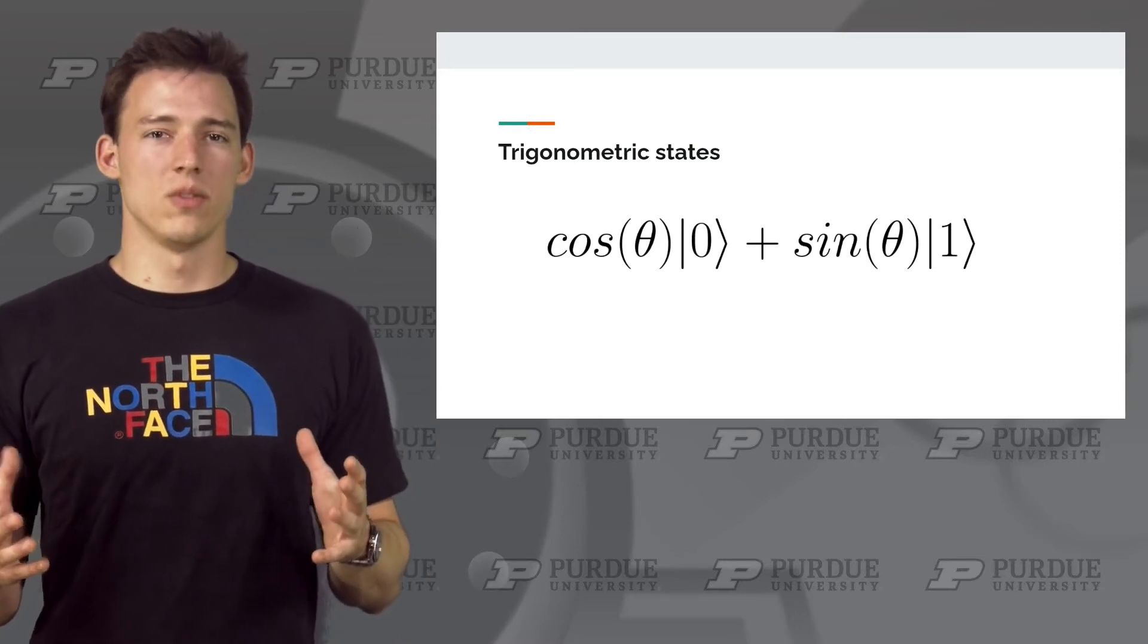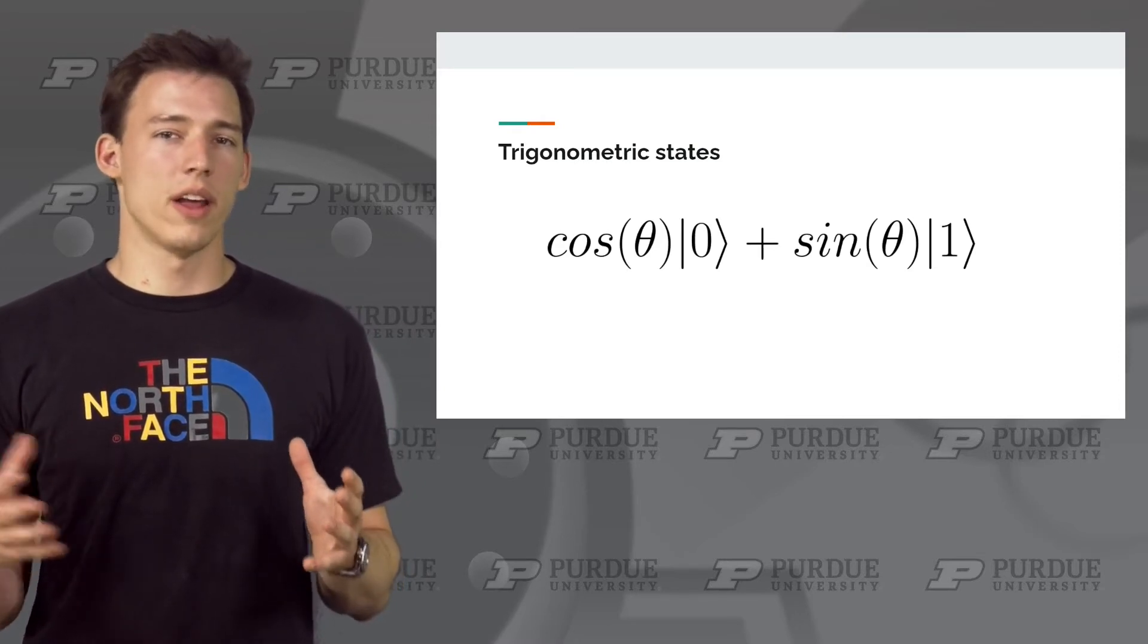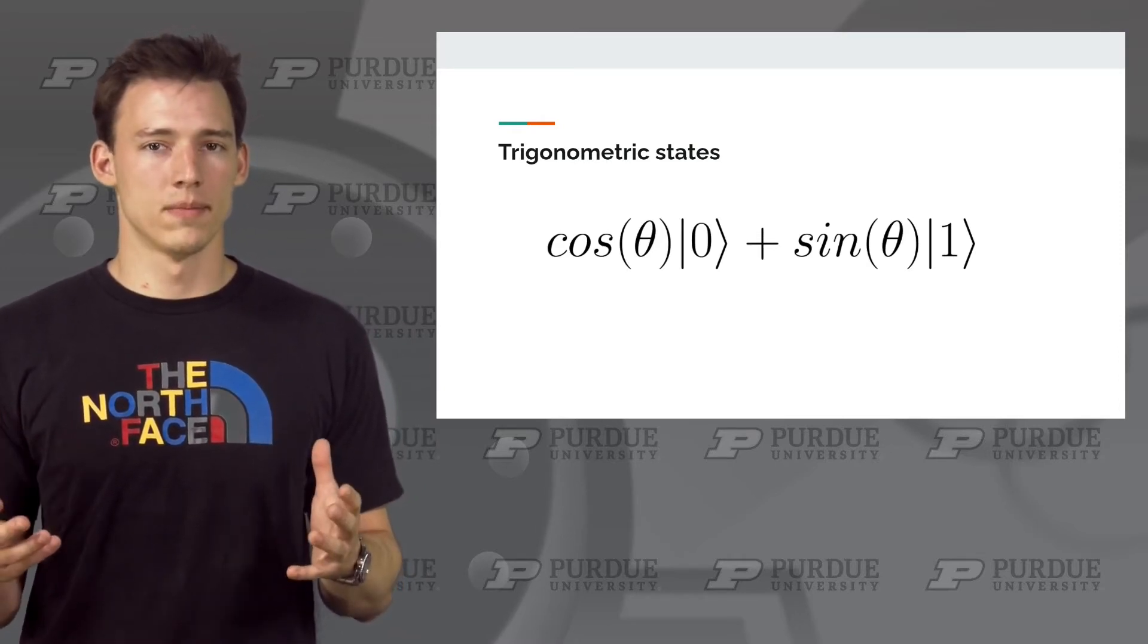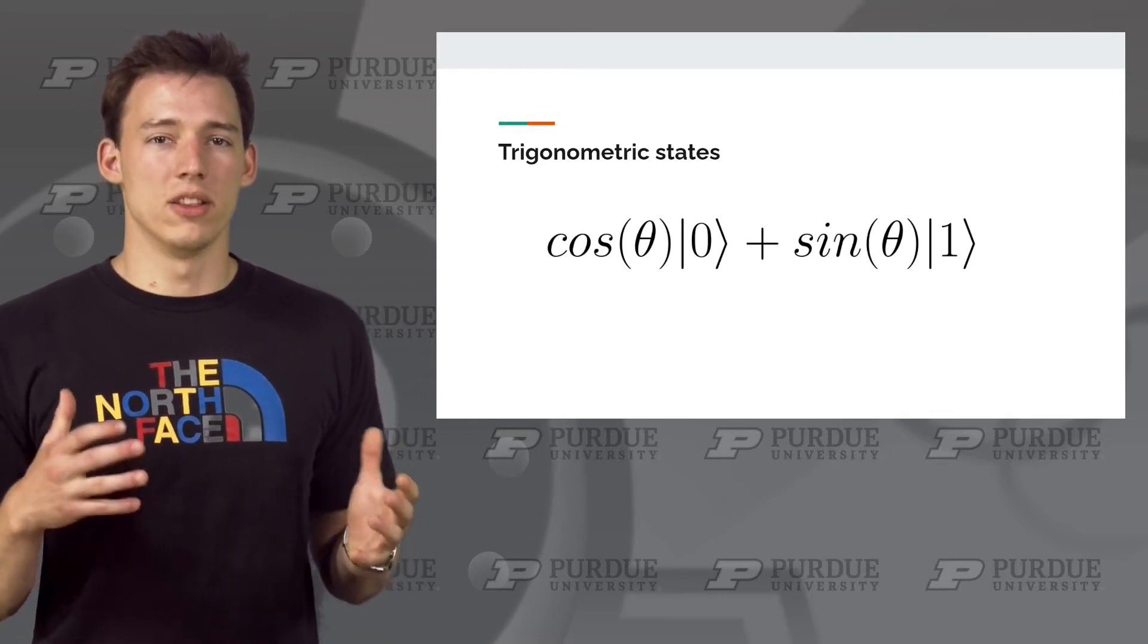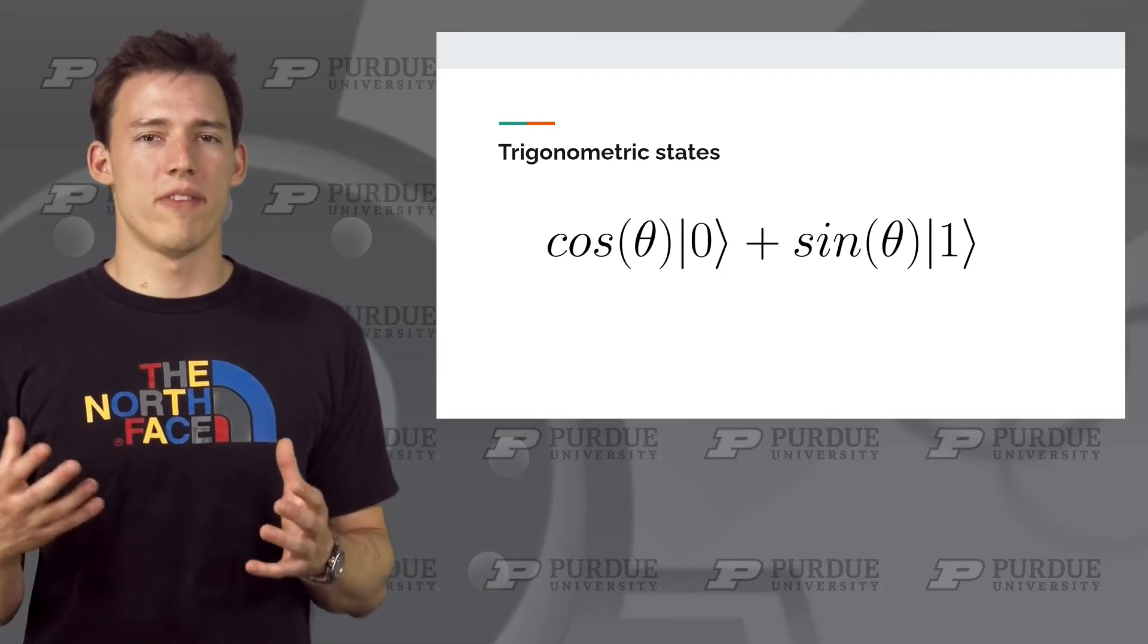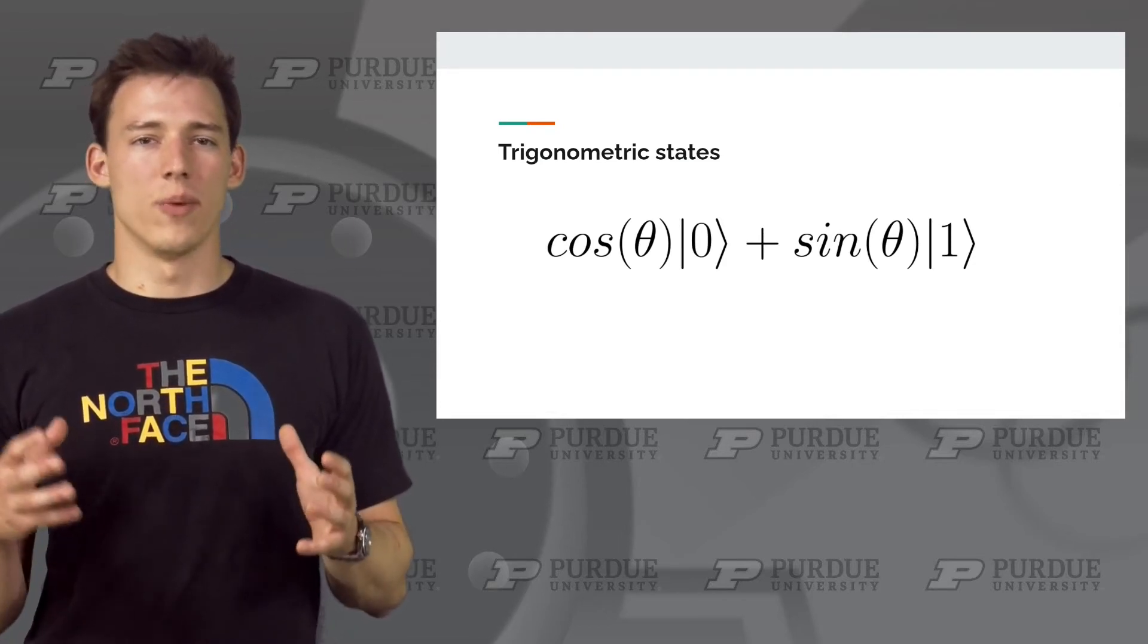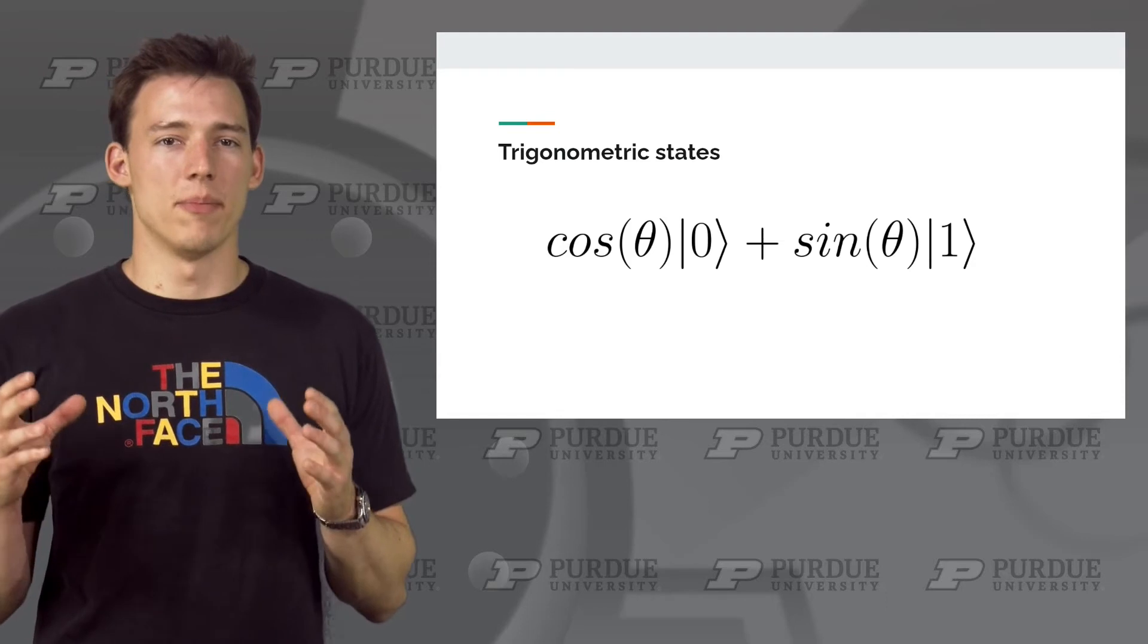Thanks to trigonometric identities, we always know that the sum of cosine squared and sine squared will be equal to 1. So with that in mind, we can think of writing a quantum state like this. This allows us to describe a large number of possible states just by varying theta. However, we are missing something that will allow us to describe every possible state.